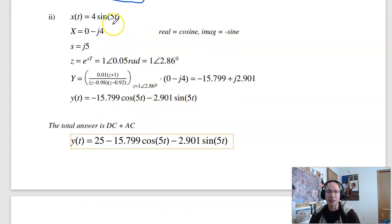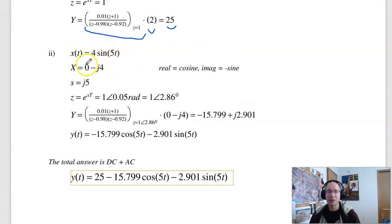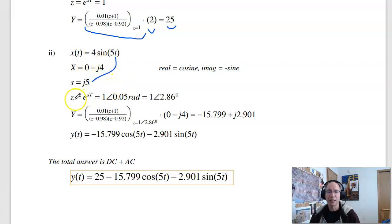Repeat at five radians per second. Here's the input at five radians per second, zero cosine, four sine. My frequency is five. Z is e to the st. That's e to the j omega times 0.01, or one at 2.8 degrees. Evaluate at that complex number times the input of that frequency gives me a complex number. What that means is the real part's cosine minus j is sine. The total answer then is DC plus AC.